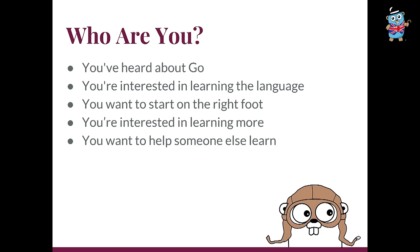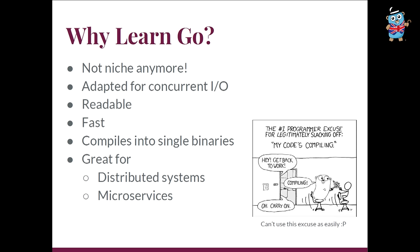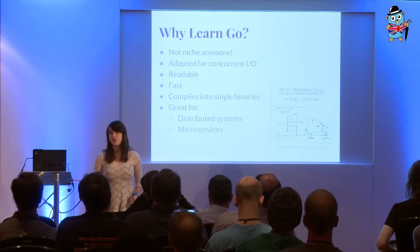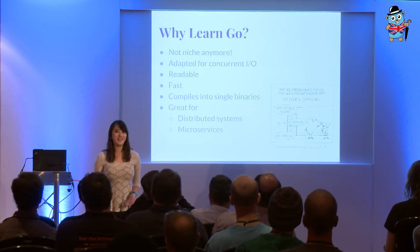So who are you? You've heard about Go, you're interested in learning the language — perhaps you've just started and know nothing about Go, maybe you've been doing it for a little bit, or maybe you want to teach someone else how to learn Go. So why learn Go? Go used to be in this place previously occupied by Node.js, and before that Ruby, Python — in other words, it was bleeding edge, hipstery, and dare I say niche, but it's graduated from that and it's applicable for many uses now. It's adapted for concurrent I/O, it's readable, it's fast, it compiles into single binaries, and it's great for microservices and distributed systems. A lot of companies are using it now, like Google for Kubernetes, Docker for Docker, Intel Snap, et cetera.